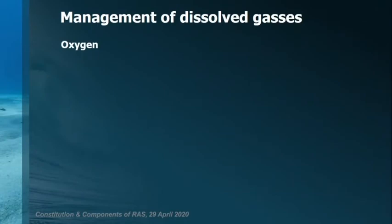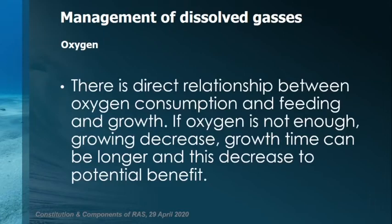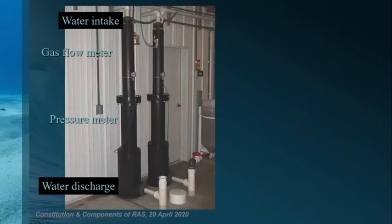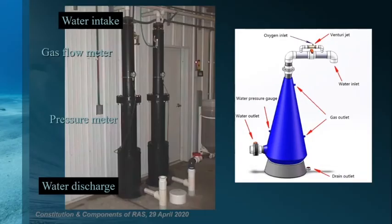Regarding RAS management of dissolved gases: there is a direct relationship between oxygen consumption and feeding and growth. If oxygen is not sufficient, growth decreases and growth time can be longer, causing a decrease in potential benefit. Some studies show that especially in recirculating systems, FCR can be reduced with increased saturated oxygen in water. These are simple oxygenation units having pressure and gas flow meters. The second one is an oxygenation cone — oxygen is given to the upper side of the cone to oxygenate water, and water enters the system from the bottom of the cone.